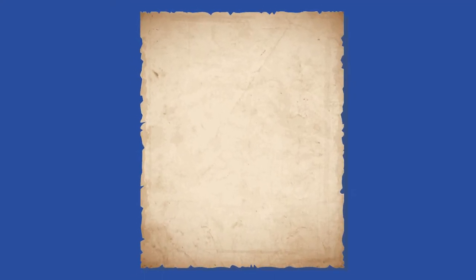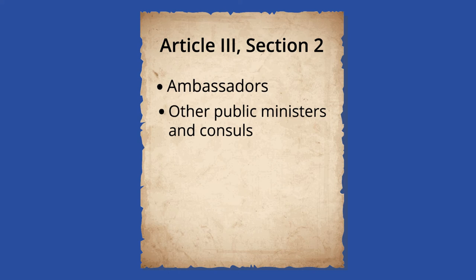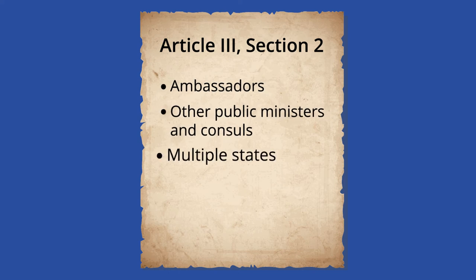The Court has original jurisdiction over a case if it can hear the case without it going through lower courts first. Article 3, Section 2 of the Constitution establishes that the Supreme Court has original jurisdiction only in cases involving ambassadors, other public ministers and consuls, and multiple states. In all other situations, lower courts must hear a case before the Supreme Court can.